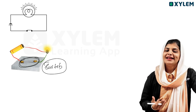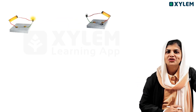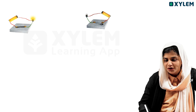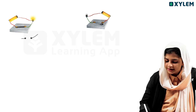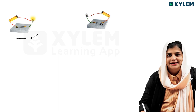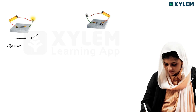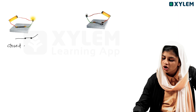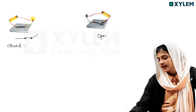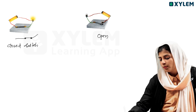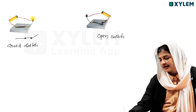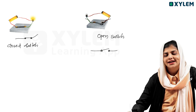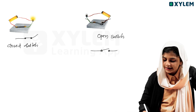When the bulb glows, the switch is on. When the switch is off, the light will not glow. We are going to look at switch on and switch off. When the switch is closed, the circuit is connected. When the switch is open, the connections are not made and it remains open.